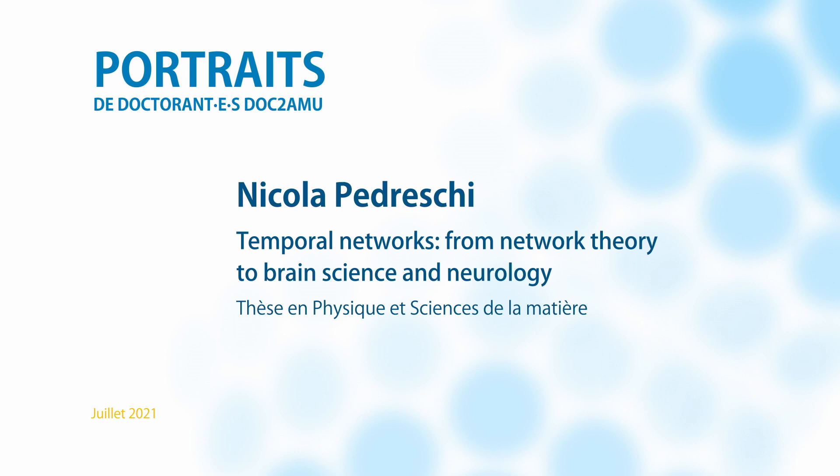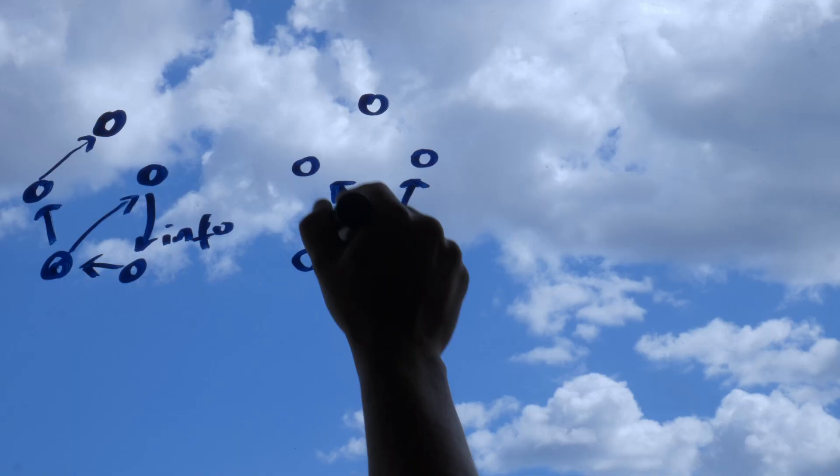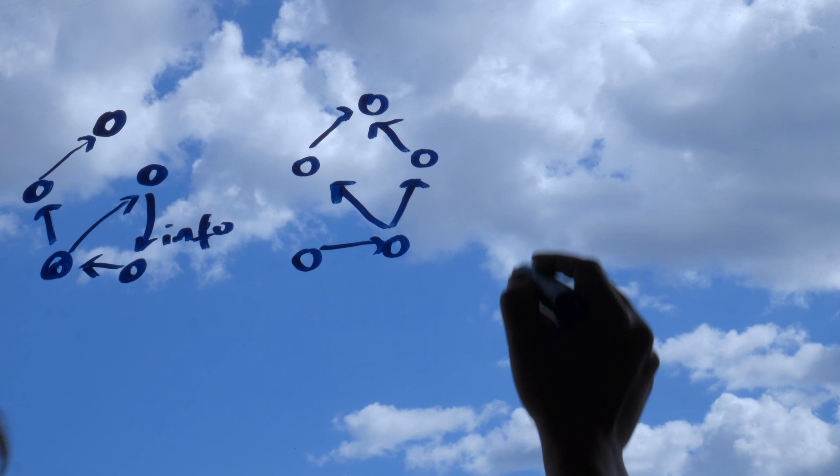In my thesis, what we're trying to do is tackle this problem of trying to understand the different functional states of the brain and the mechanisms that underlie them through specific tools that come all the way from network theory. With network we mean any system such as the brain that can be represented as an ensemble of different agents seen as nodes of a network that interact with each other, and the interactions among these nodes are the edges connecting them.